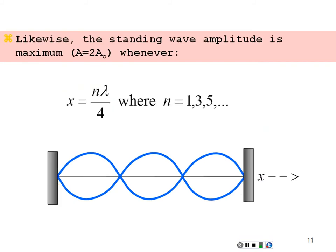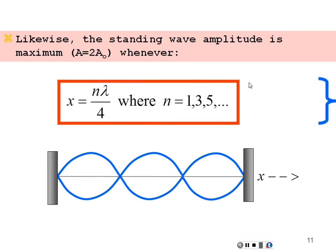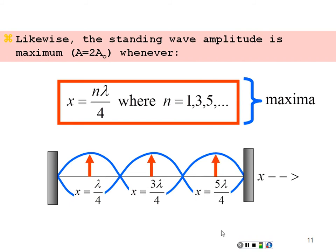Likewise, we have antinodes — maxima — whenever we have positions at odd-integer multiples of quarter-wavelengths: x = λ/4, 3λ/4, 5λ/4, and so on. Within the equation this gives sin(kx) = sin(π/2), the maximum value of the sine function, yielding a maximum amplitude of 2A₀. Note that between successive antinodes there is also a half-wavelength distance, and a node and an adjacent antinode are spaced a quarter-wavelength apart.